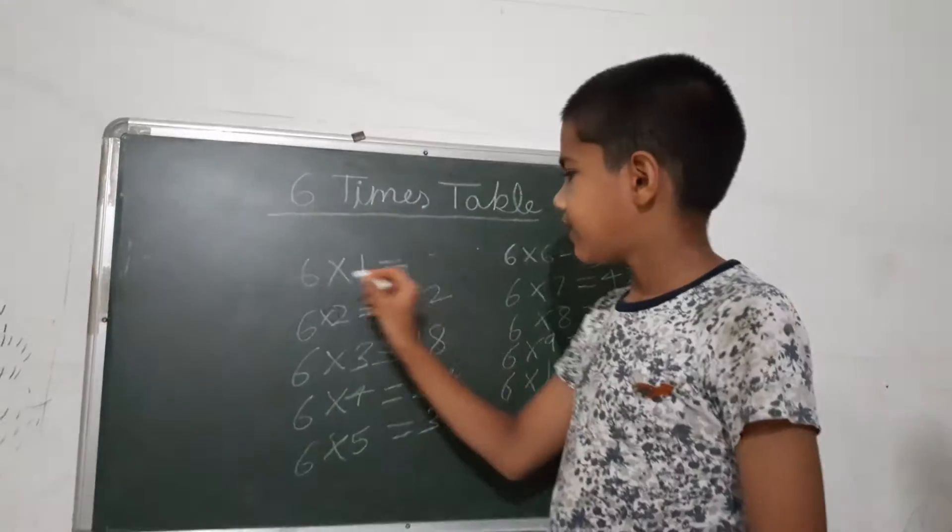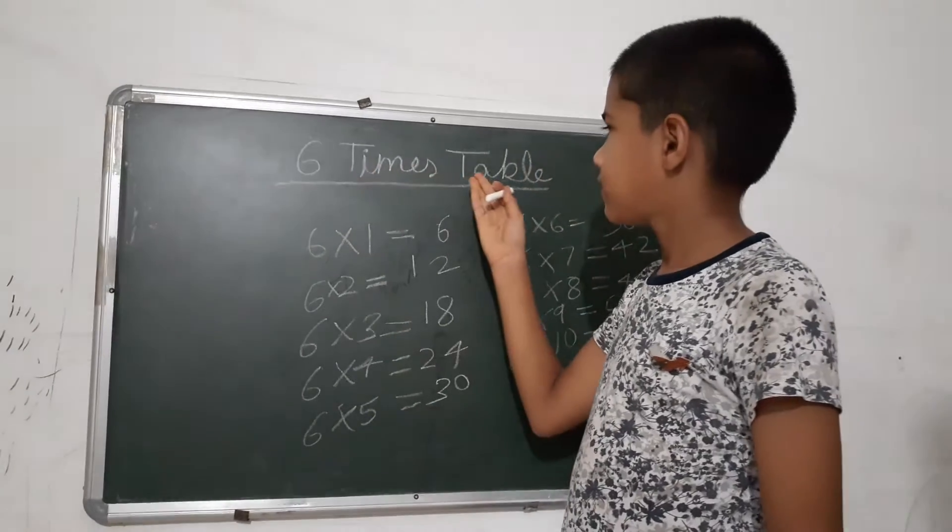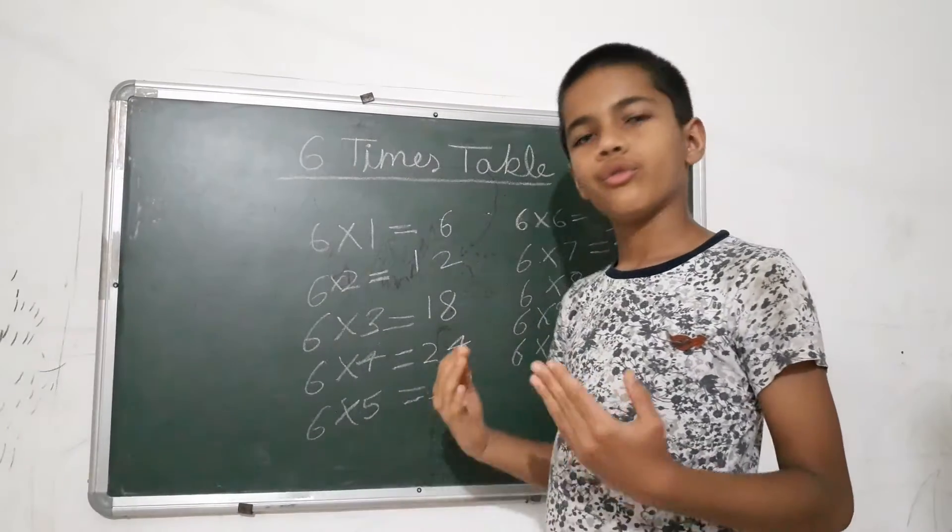So, 6 times 1, 6, our 6 times table is complete. Now, read this.